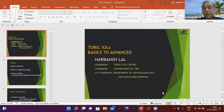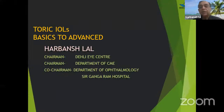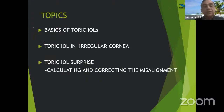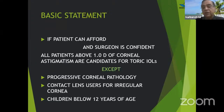Thank you Dr. Arup for giving me this opportunity and such kind words. I will cover this topic in three heads: basics of toric IOLs, toric IOLs in irregular cornea, and toric IOL surprise — calculating and correcting misalignment. As already highlighted, if the patient can afford it and the surgeon is confident, all patients above one diopter of corneal astigmatism are candidates for toric IOLs.